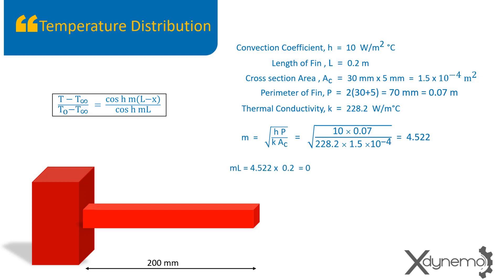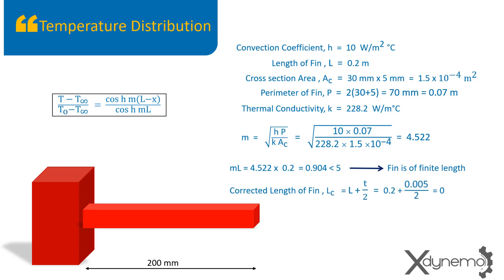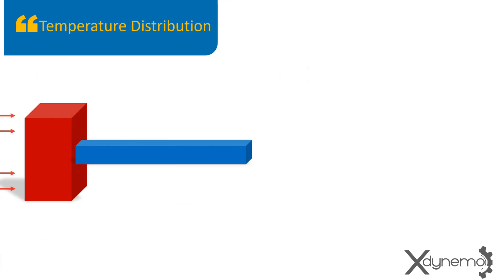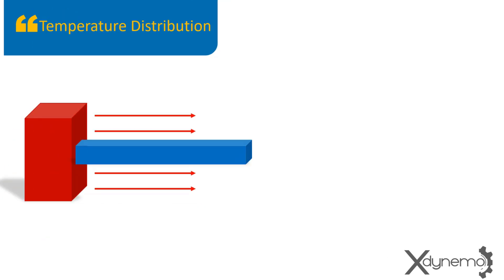M·L equals 0.904, which is less than 5. This implies that the FIN is of finite length and we have to use the corrected length approach. The corrected length of FIN is L plus T/2, equals 0.202 meters. We modify the temperature distribution formula using corrected length L_c.